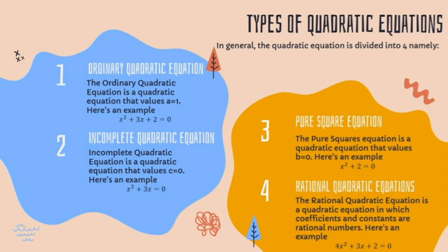And the last, the fourth type: the rational quadratic equation. The rational quadratic equation is a quadratic equation in which the coefficients and constants are rational numbers. Here is an example: 4x² + 3x + 2 = 0.